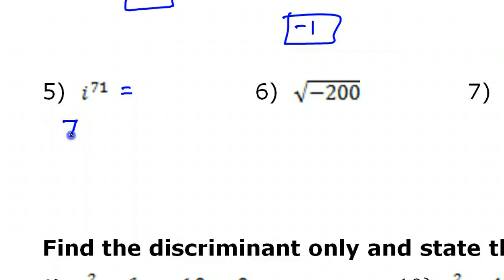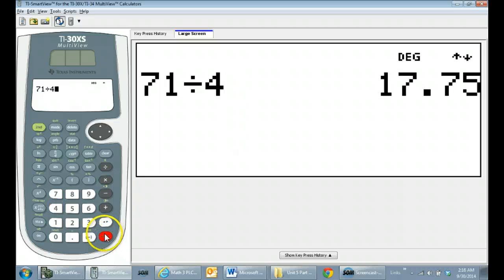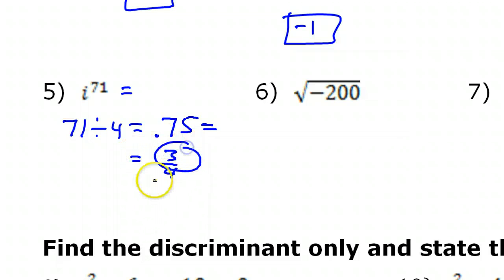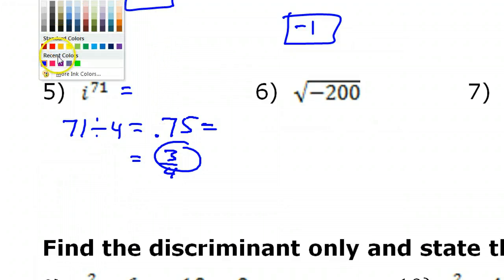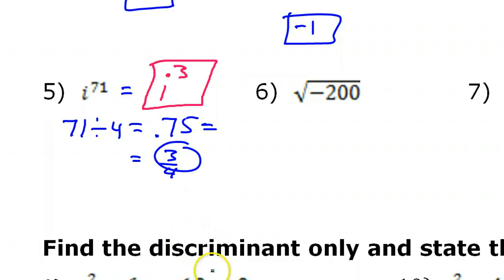Let's use our shortcut and do 71 divided by 4. 71 divided by 4 gives you .75, that's 3 fourths. And that 3 fourths reminds us that it's going to be i to the third power, which is negative i. Three fourths — third power — is another way to help you remember it.